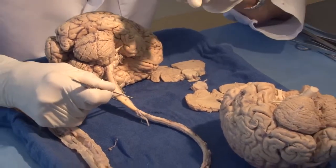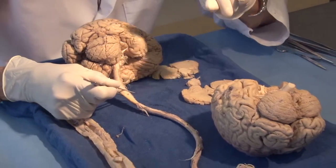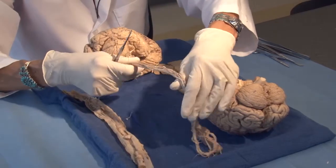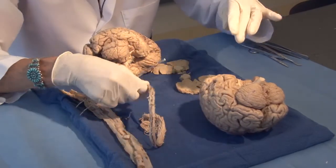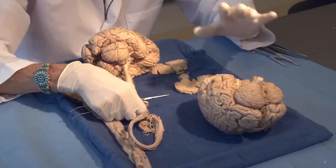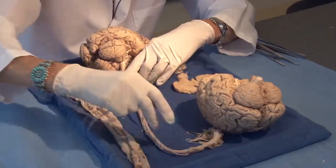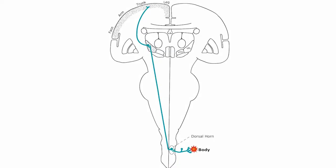So we have two somatic sensory pathways coming from the body, and there are comparable pathways coming from the trigeminal nerve, but we're just going to talk about the spinal cord contribution today. The spinothalamic, or anterolateral pathway, has three neurons. It is always the second neuron that decussates or crosses to the opposite side to ascend to the thalamus.